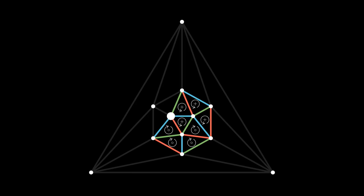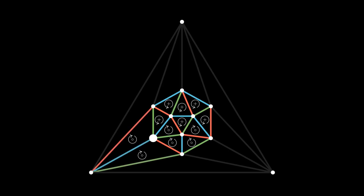Now focusing on the next vertex: of its three neighbors we've already oriented, two are counterclockwise and one is clockwise, so the other two must also be counterclockwise. Focusing on another vertex that also touches three already-oriented faces: two of them clockwise and one counterclockwise, so the other two must be oriented clockwise. We'll continue around other vertices, each touching a single minority triangle, forcing the other two faces to also be oriented clockwise.